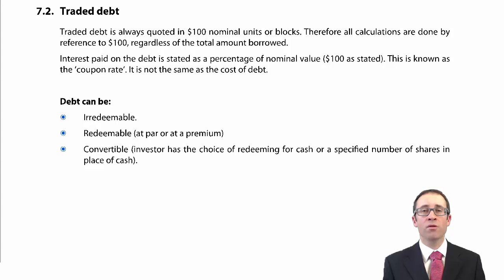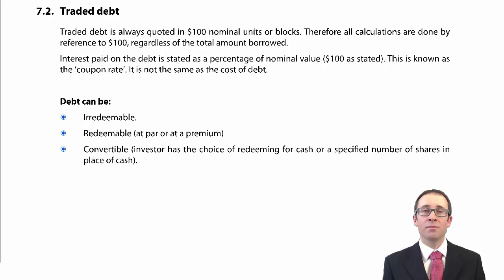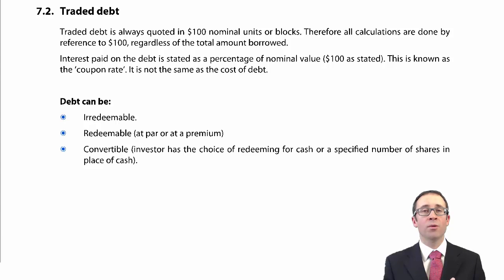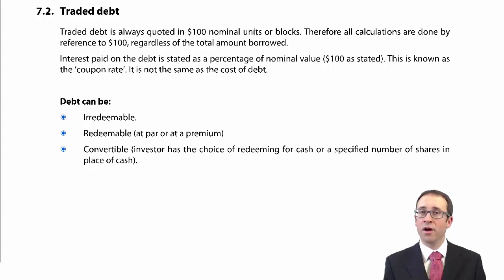The third and final aspect that we will go through and look at is convertible debt, which is a complicated version of redeemable debt. Convertible debt gives the holder of the debt — the investor — the option of taking their cash back or taking shares. Now, that creates a problem for us when we come to look at the redemption value in the IRR calculation: are we going to put in the redemption value of the cash, or are we going to put in the redemption value of the shares?